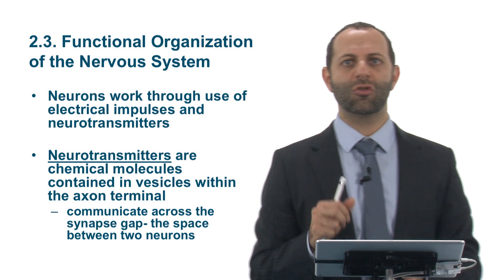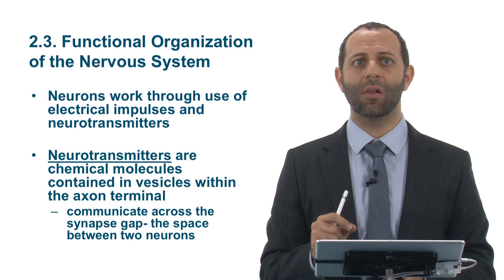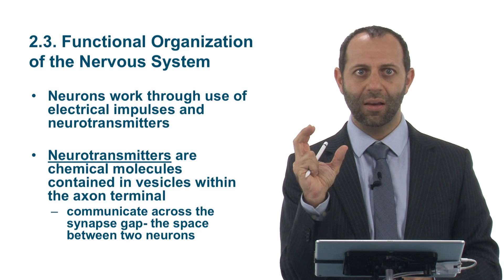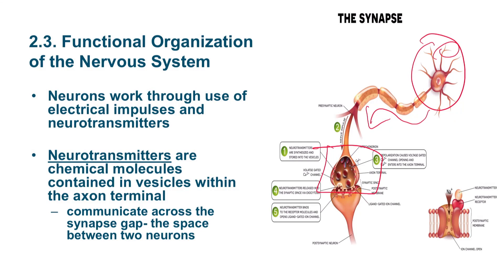Neurons work through the use of electrical impulses and neurotransmitters. Neurotransmitters are chemical molecules contained within something called a vesicle — almost like a sac — at the end of an axon terminal. The soma is the cell body, dendrites receive information, and the axon sends information outward. At the bottom of the axon is the vesicle area, which contains our neurotransmitters — chemical molecules that communicate across the synapse and the gap within the axon.